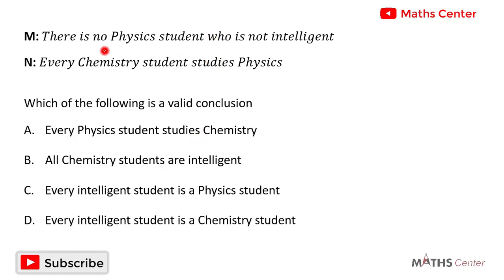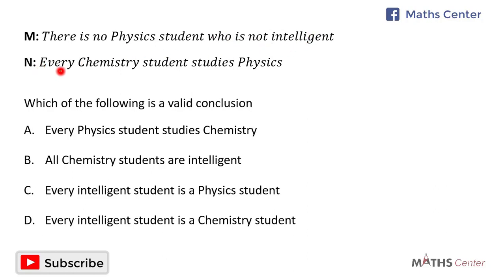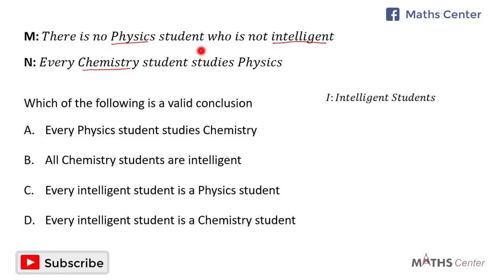Let's read the statements again. The first statement is: there is no physics student who is not intelligent. The second statement is: every chemistry student studies physics. If we look at these two statements we can see that there are three groups of students: intelligent students, physics students, and chemistry students. I'll use the letter I to represent intelligent students.